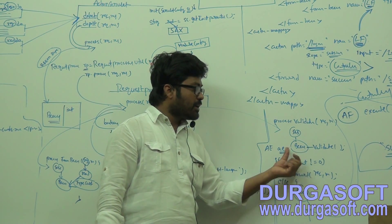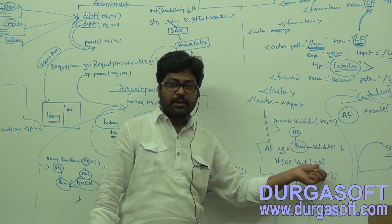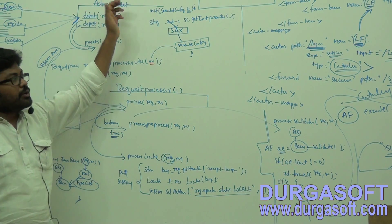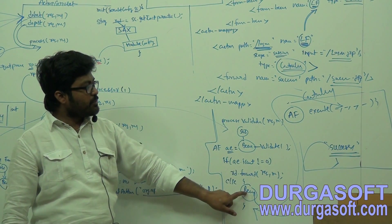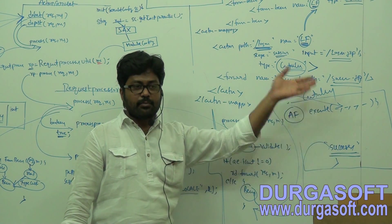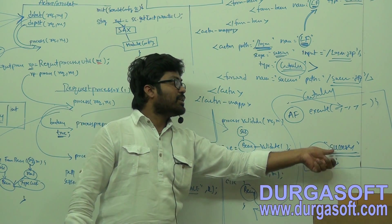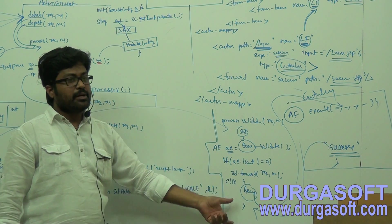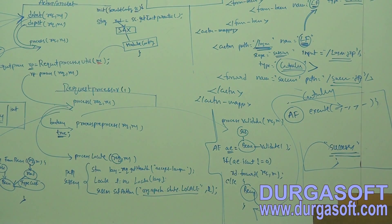After storing data into the bean, it calls processValidate. This processValidate method calls the validate method from your bean object. In that bean, if it finds any invalid data, we configure error messages under the ActionErrors object. It counts error messages. If it finds errors, it forwards them to the same input page. If there are no error messages, it maps to the controller. The controller reads bean data, processes it, and finally returns success or failure names. For those names, actual success or failure pages are configured using the forward tag, and that page is forwarded to the user.